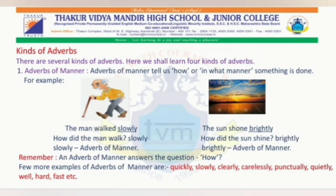There are several kinds of adverbs. Here, we shall learn four kinds of adverbs. First, adverbs of manner. Adverbs of manner tell us how or in what manner something is done. For example: the man walked slowly. How did the man walk? Slowly. Here, the word 'slowly' is an adverb of manner.